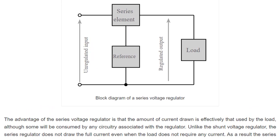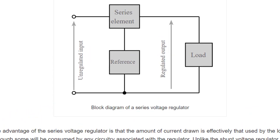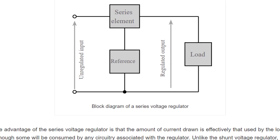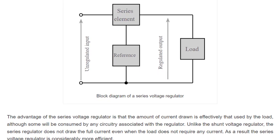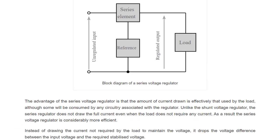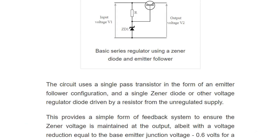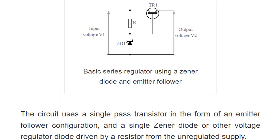Series voltage regulators use a variable element placed in series with the load. By changing the resistance of that series element, the voltage dropped across it can be changed, and the voltage across the load remains constant.